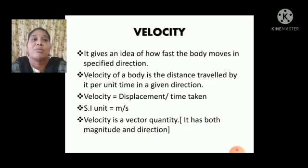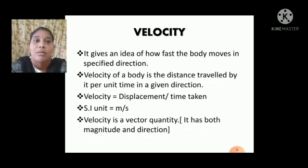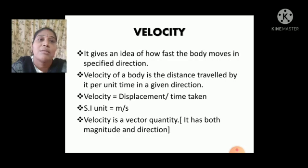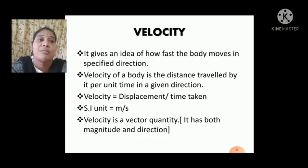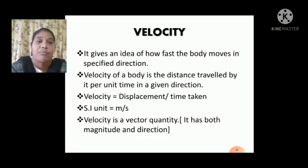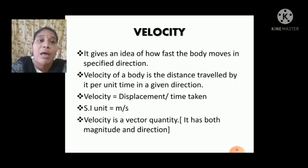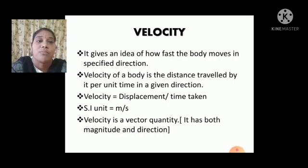The next concept is velocity. Velocity gives an idea of how fast a body moves in a specified direction. In speed, only distance is covered within a time. But velocity also covers distance but in a specified direction. The definition of velocity is: velocity of a body is the distance traveled by it per unit time in a given direction — meaning it shows direction also, just like displacement.